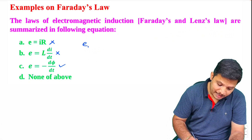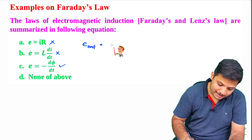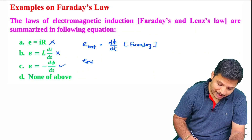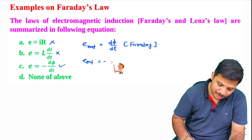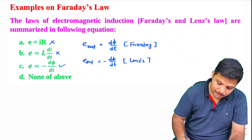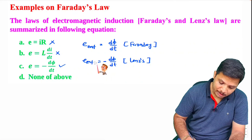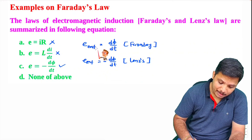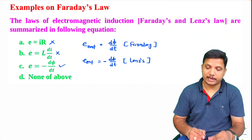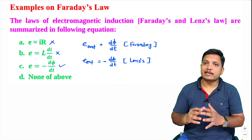Faraday's law explains induced EMF as the rate of change of flux with respect to time. Lenz's law explains that this induced EMF has a minus sign — it is the negative of the rate of change of flux with respect to time. Lenz's explained the polarity and Faraday's explained the magnitude of induced EMF. Combined, induced EMF equals minus of rate of change of flux with respect to time.